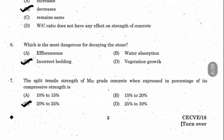Question 7: The split tensile strength of M20 grade concrete, when expressed as a percentage of its compressive strength, is what? The split tensile strength is 20 to 25 percentage of the compressive strength.